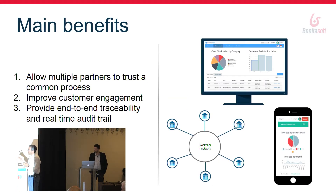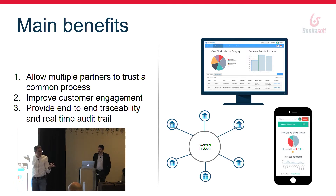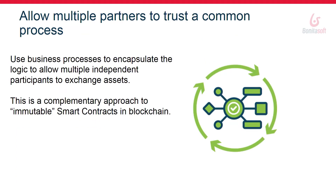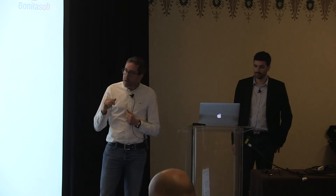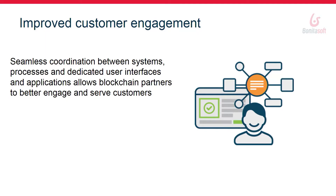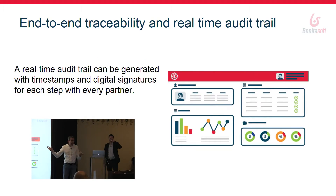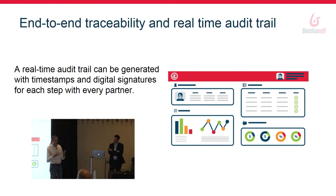The benefits we see from integrating the two are: first, allowing multiple partners to join a common process; second, improving customer engagement; and third, providing end-to-end traceability. Trusting the common process is about encapsulating all the business logic, allowing different partners to work together — a complementary approach to native blockchain capabilities like smart contracts. For customer engagement, the idea is to propose a platform for blockchain developers to build dedicated UIs for each party. And for traceability, we use out-of-the-box BPM traceability together with native blockchain features like digital signature and transaction monitoring.